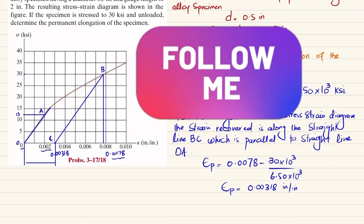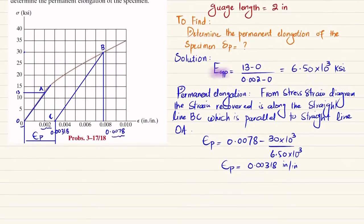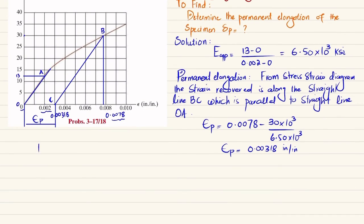Now you can see that we know strain is equal to change in length divided by original length. So for permanent strain, the permanent strain will be equal to permanent length divided by original length.